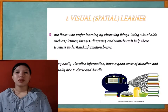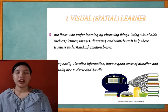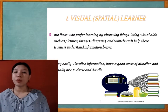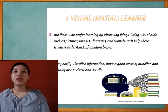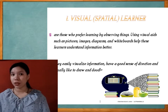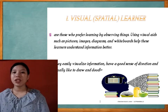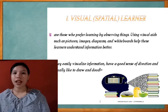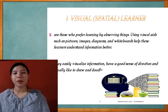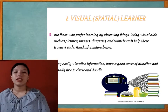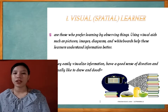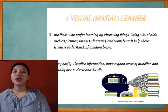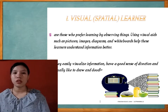Number one, visual or spatial learners. These learners prefer learning by observing things using visual aids such as pictures, images, diagrams, and whiteboards. They easily visualize information, have a good sense of direction, and usually like to draw and doodle.